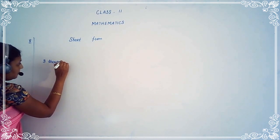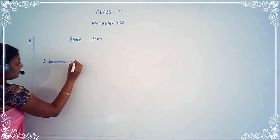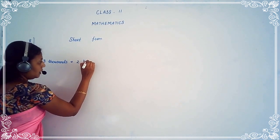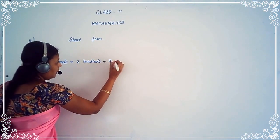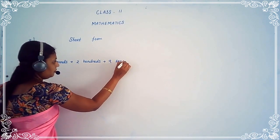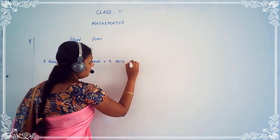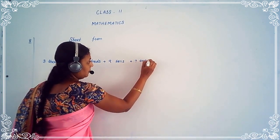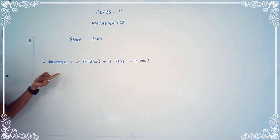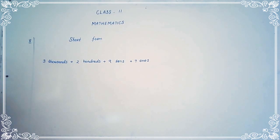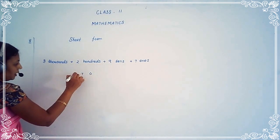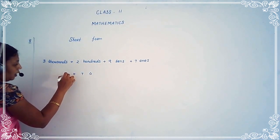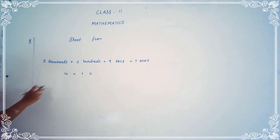Example one: three thousandths plus two hundredths plus nine tenths plus seven ones. First, we want to write in the periods: ones, tenths, hundredths, and thousandths.